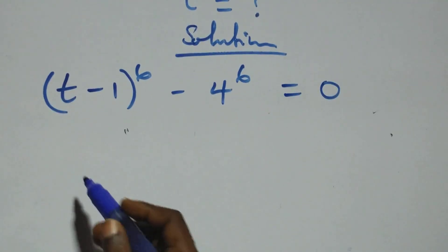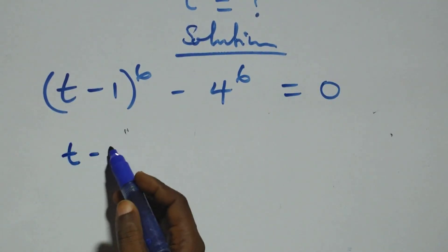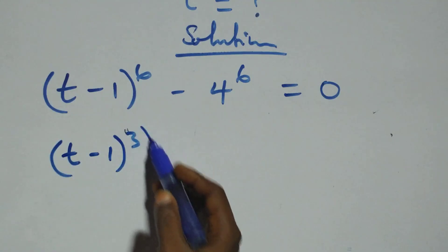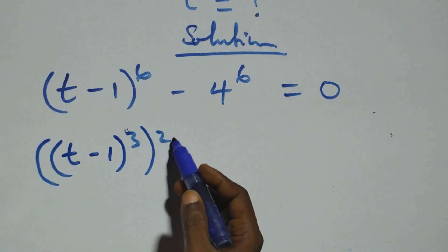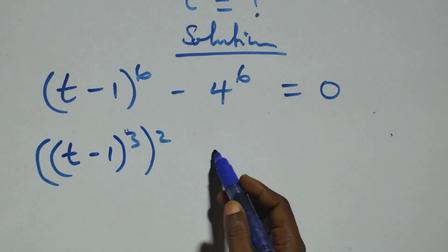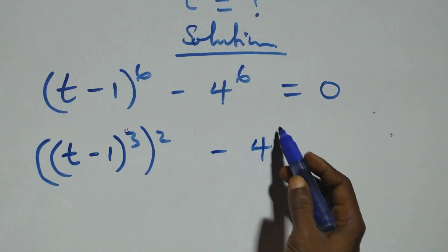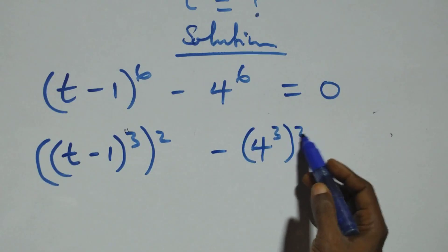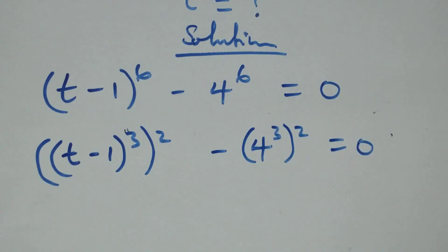In here we can express this as t minus 1 times 4 raised to the power 3, then r raised to the power 2 — as 2 times 3 gives us 6 — also minus 4 raised to the power 3, then r raised to the power 2, equals 0.